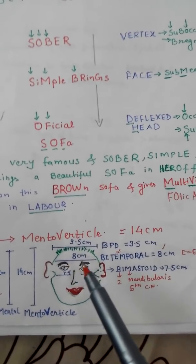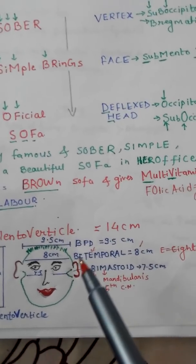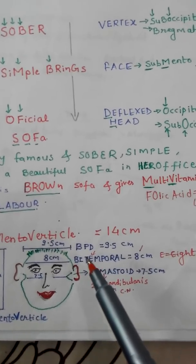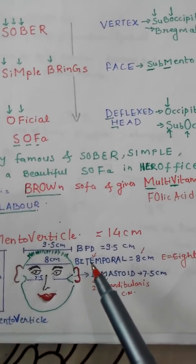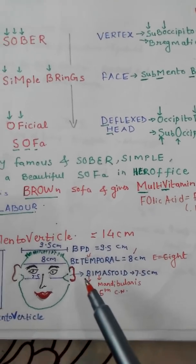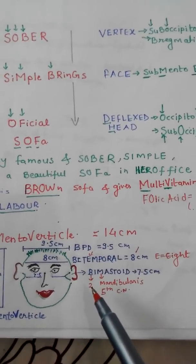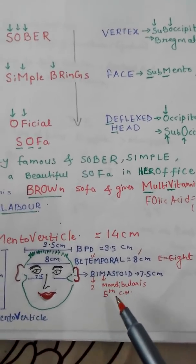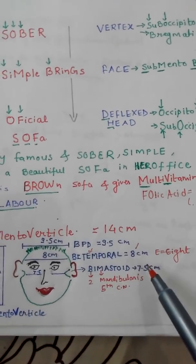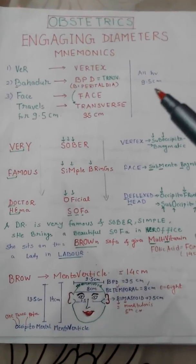For transverse diameters of the fetal head: biparietal is 9.5 (already covered above), bitemporal is 8 — remember the 'e' in bitemporal stands for eight — and bimastoid is 7.5: 'bi' means two, 'M' is the mandibular nerve which is the 5th cranial nerve, so 2 plus 5 equals 7, giving 7.5.